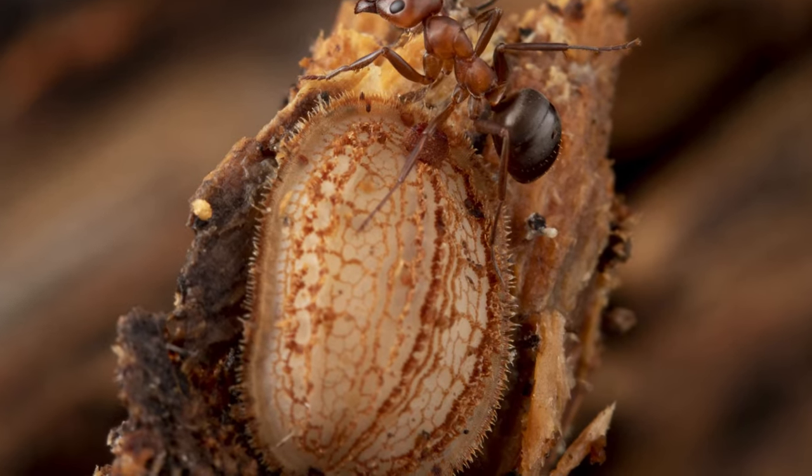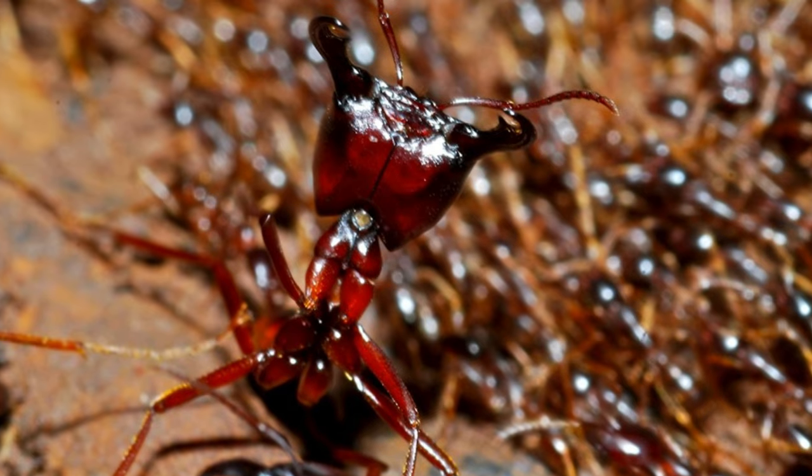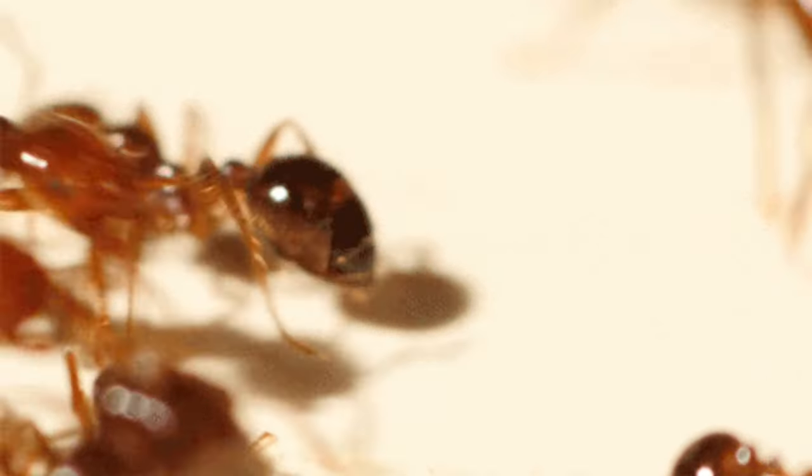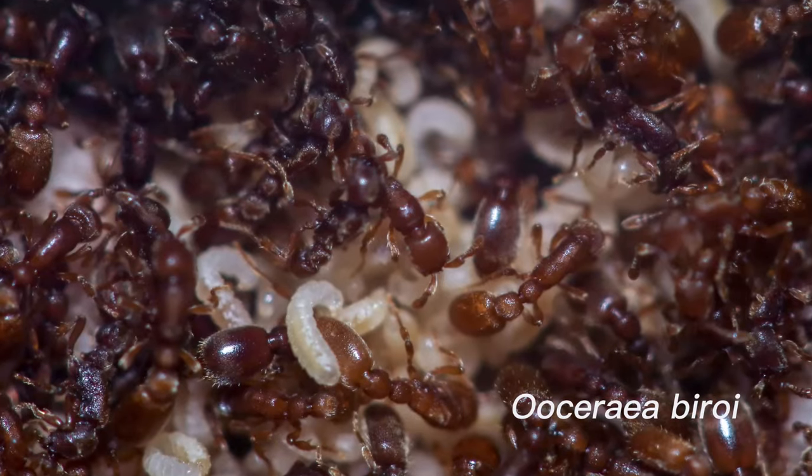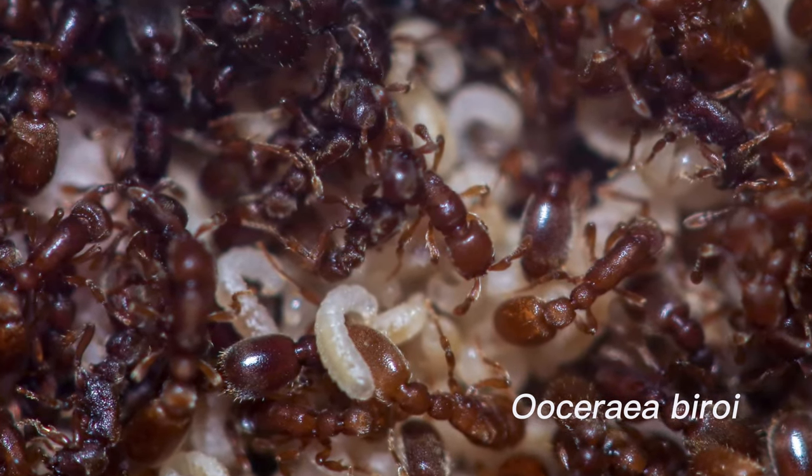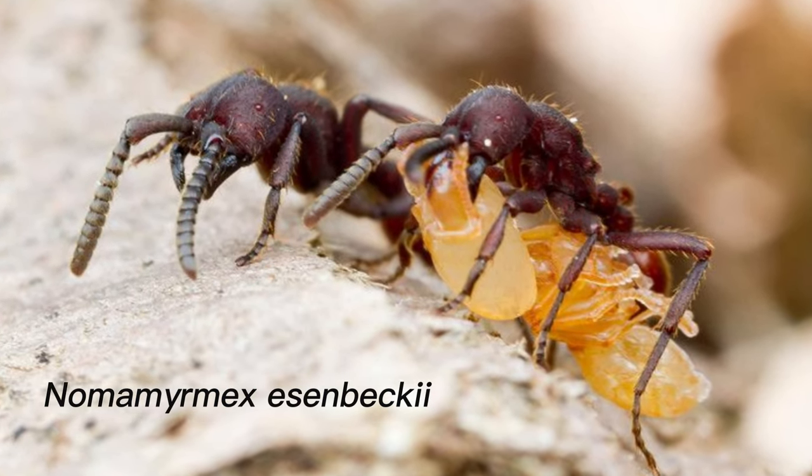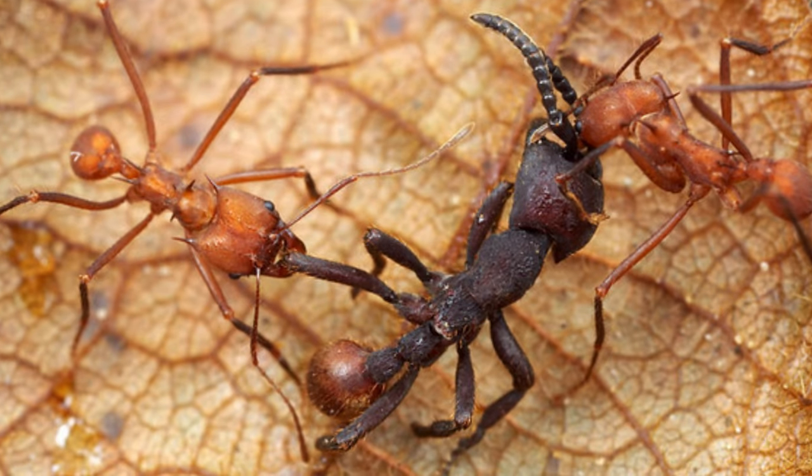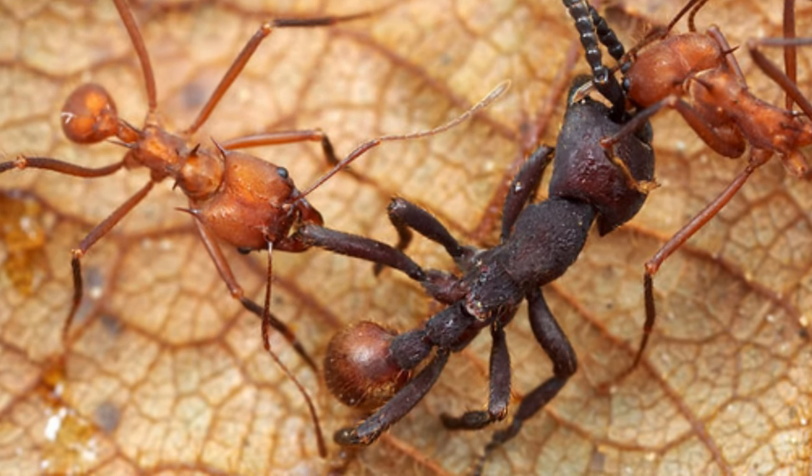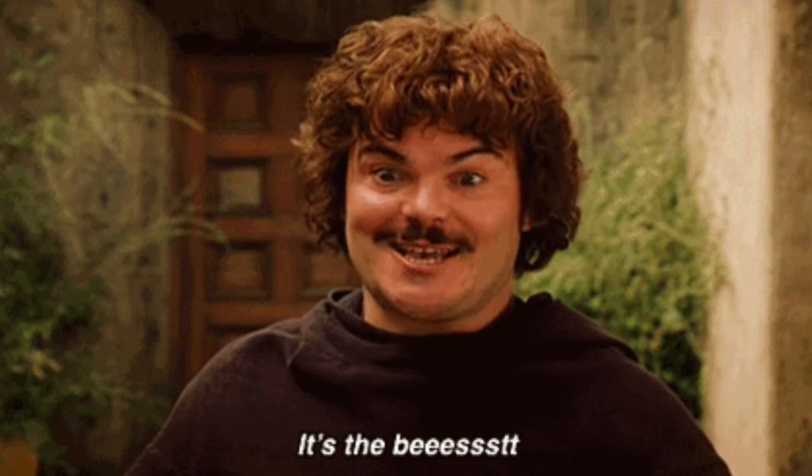One of the predominant predators on ants are other ants, especially the army ants, and their close relatives. Some ants, such as the raider ant, and the army ant, are obligate myrmecophages. That is, they eat exclusively other ants, so they can be the best anteater out of all anteaters, objectively.